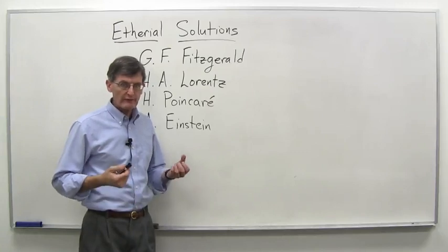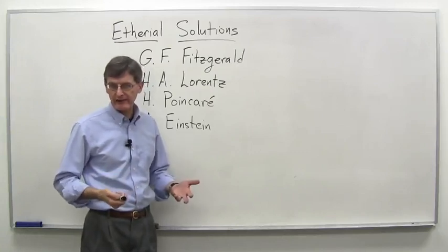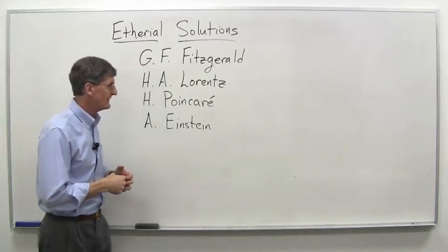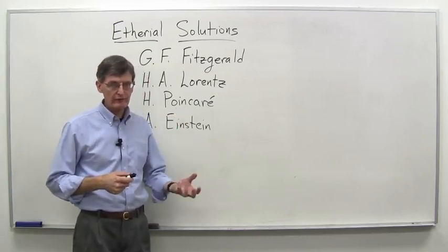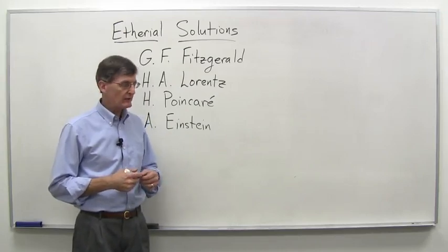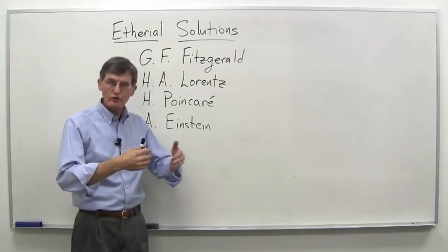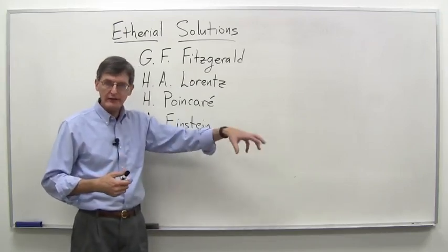So we have this puzzle, or physicists had this puzzle in the 1890s: what to do with something like the Michelson-Morley result, the null result that showed that motion through the ether could not be detected.